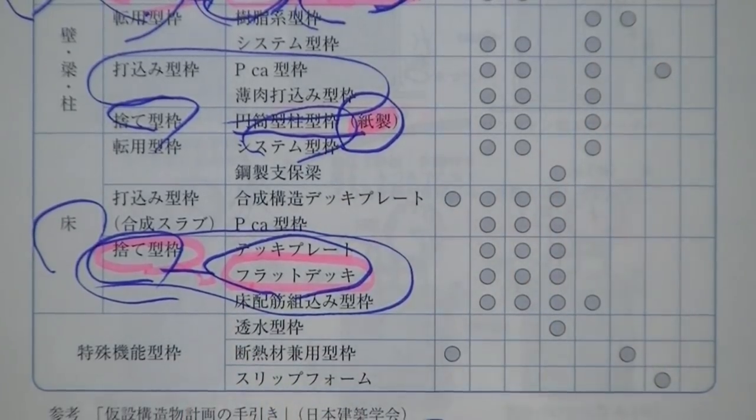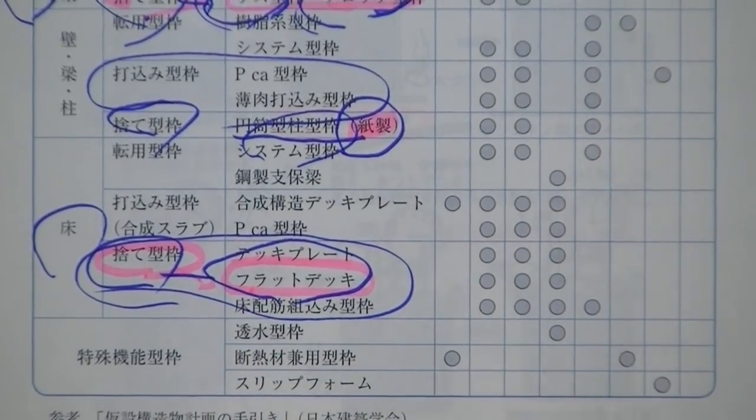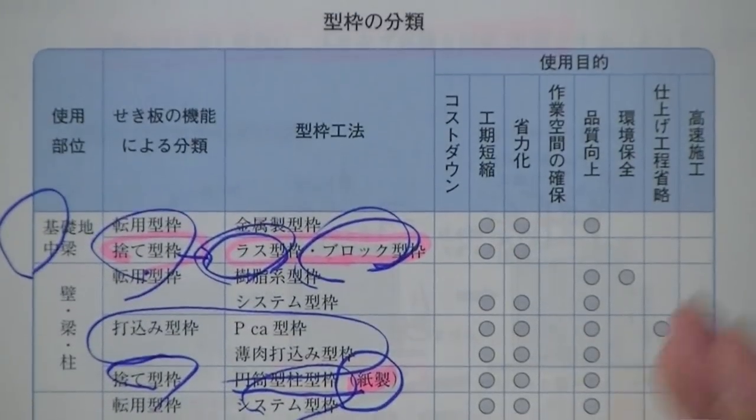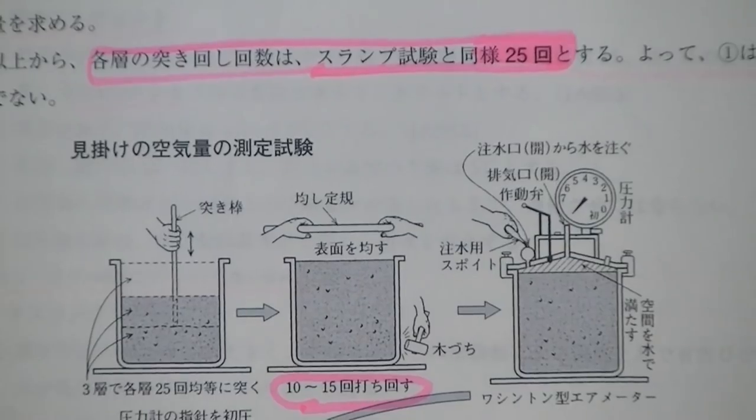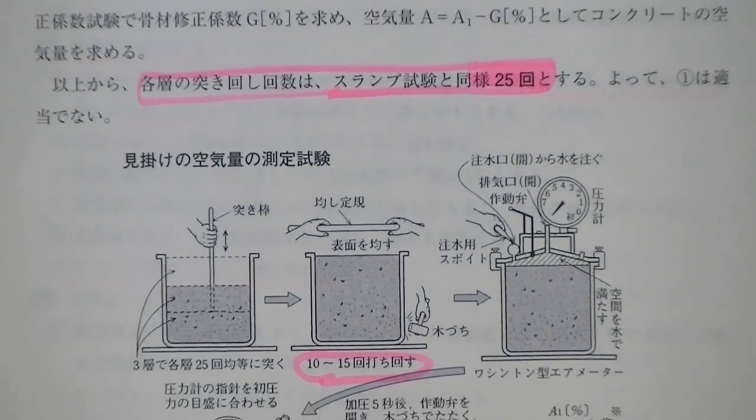捨て型枠は工期短縮のために役立ちます。天用型枠との区別をつけなさい、これが今年のポイントです。さっきはスランプ試験をやったんですが、30センチのコーンを引き上げて何センチ沈下したかを測ります。